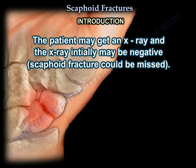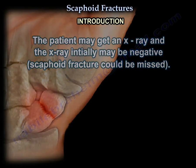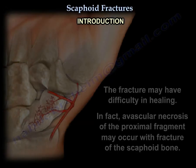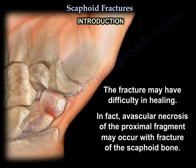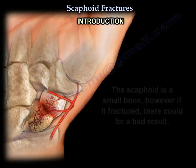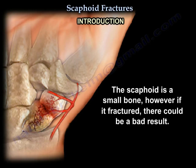Scaphoid fracture could be missed. The blood supply of the scaphoid is very unique, and the fracture may have difficulty in healing. In fact, avascular necrosis of the proximal fragment may occur with a fractured scaphoid bone. It is a small bone, but if it is fractured, it can have bad effects.